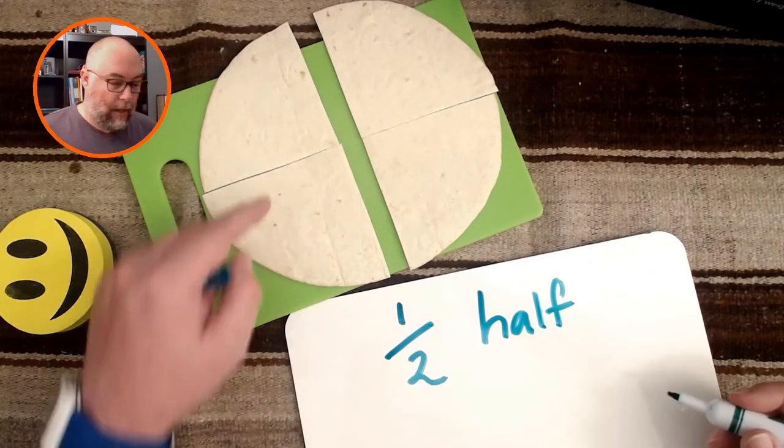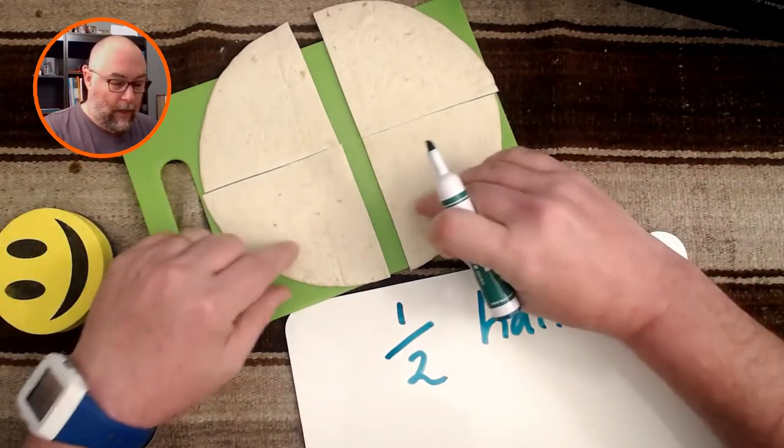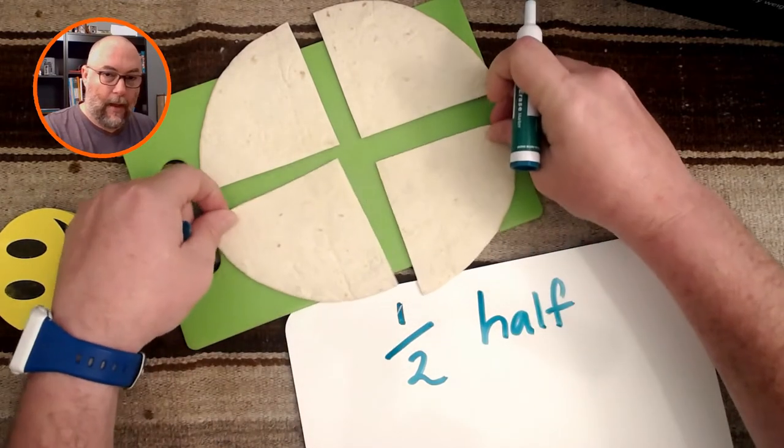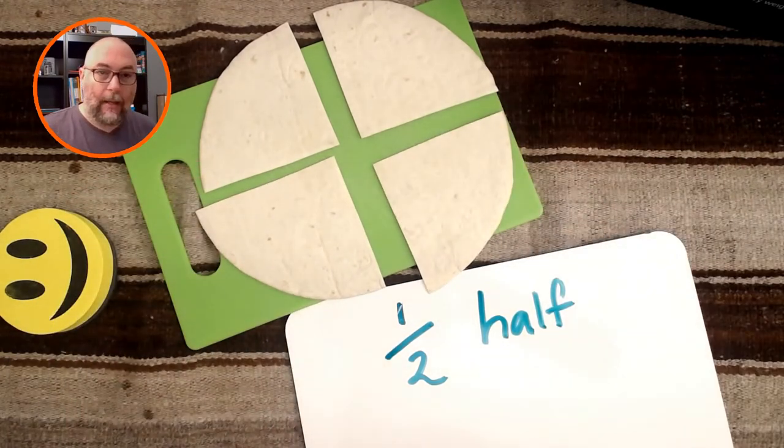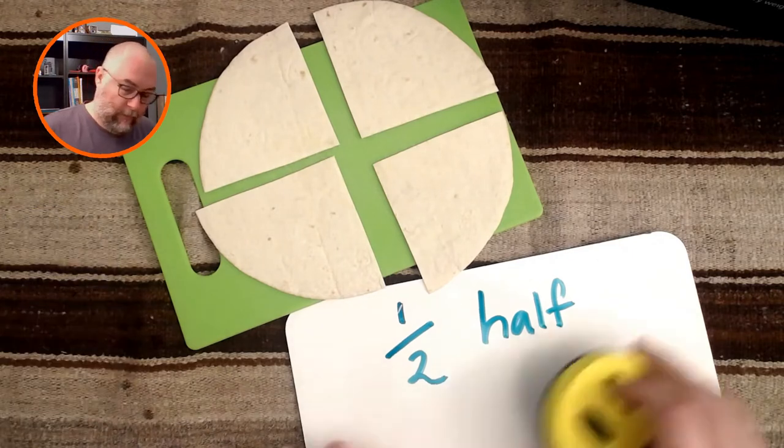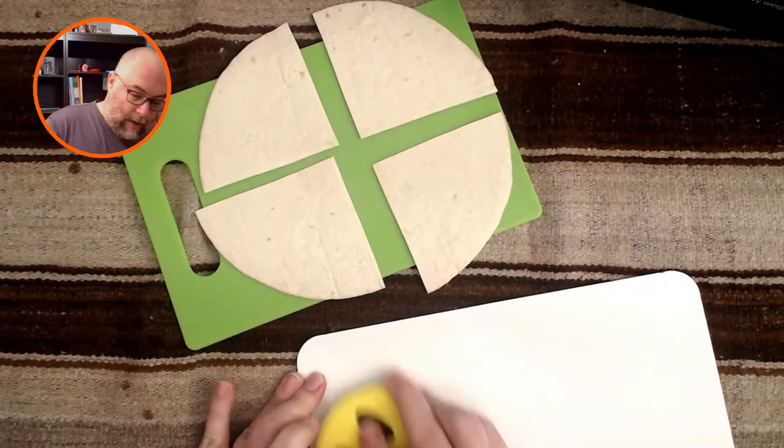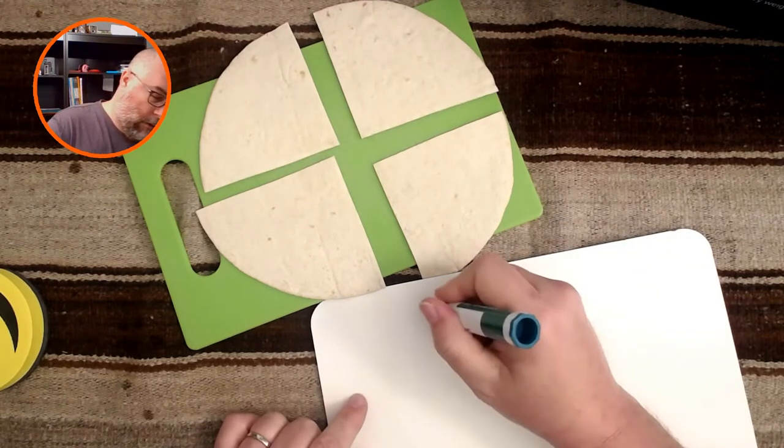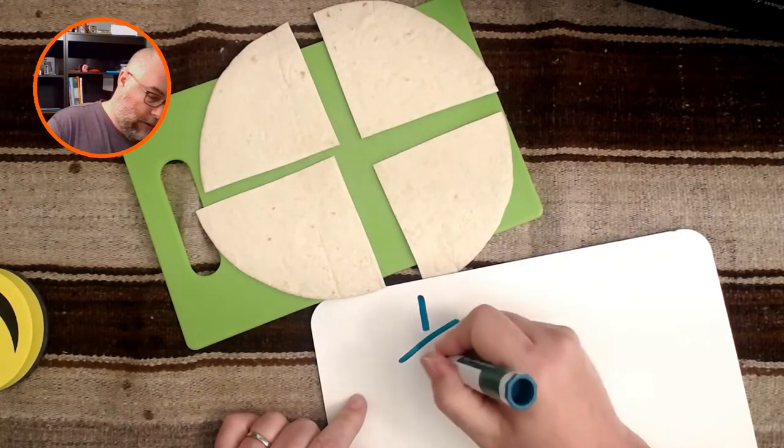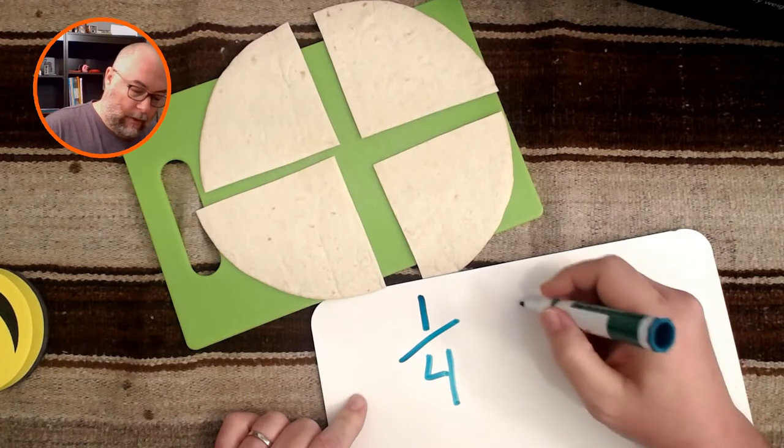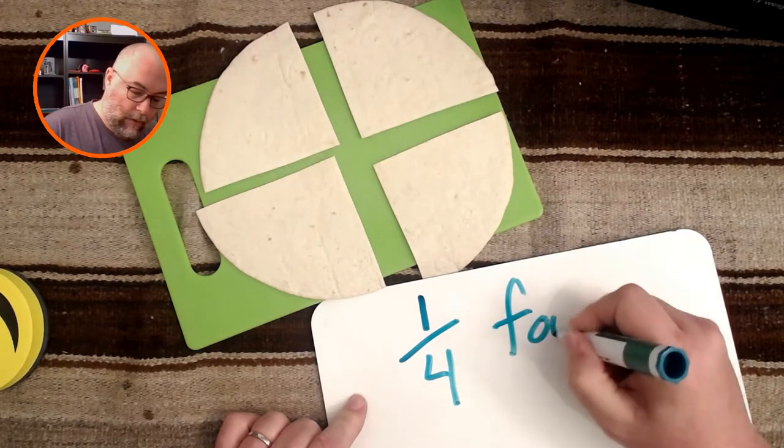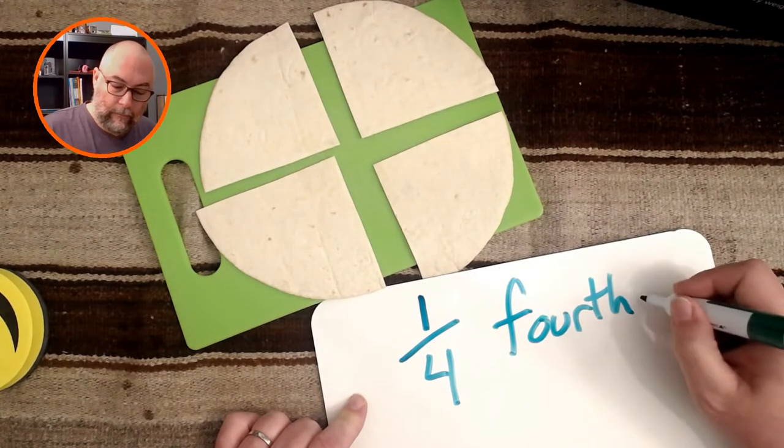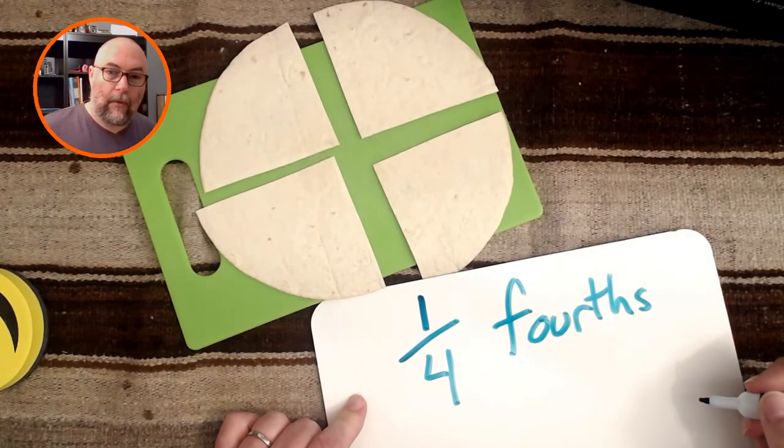So I slice this in half. When I cut it into four, like that, I got something called fourths. So the way you write that is like this. One fourth. And the word is fourths.